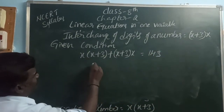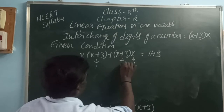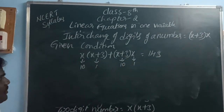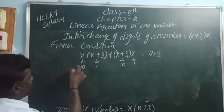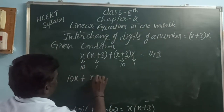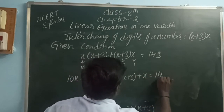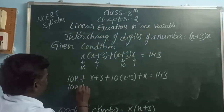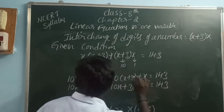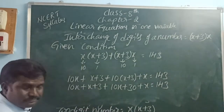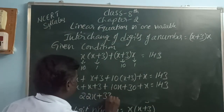Using expanded form: 10x plus (x+3) plus 10(x+3) plus x equals 143. Simplifying: 10x plus x plus 3 plus 10x plus 30 plus x equals 143, which gives 22x plus 33 equals 143.